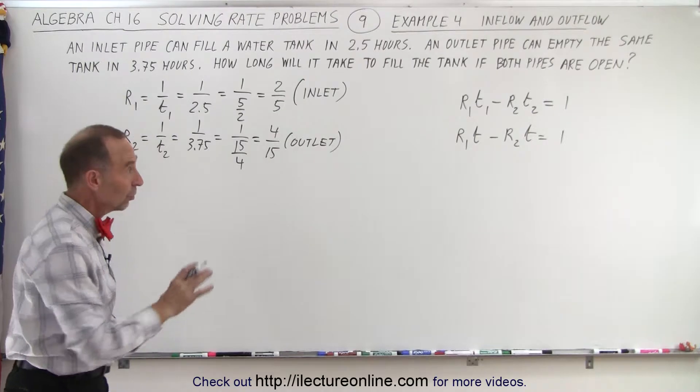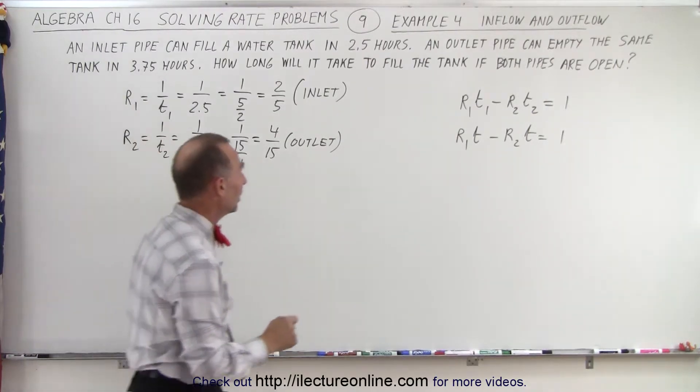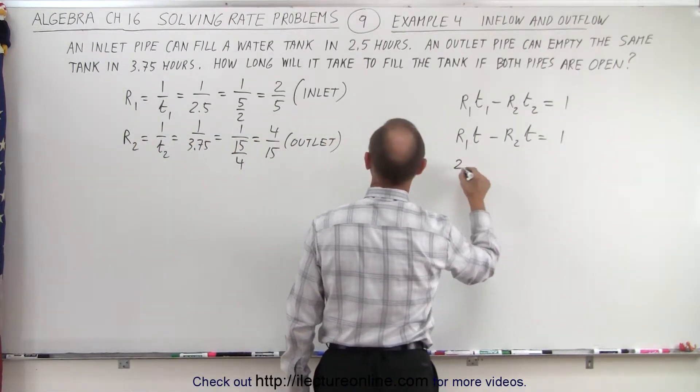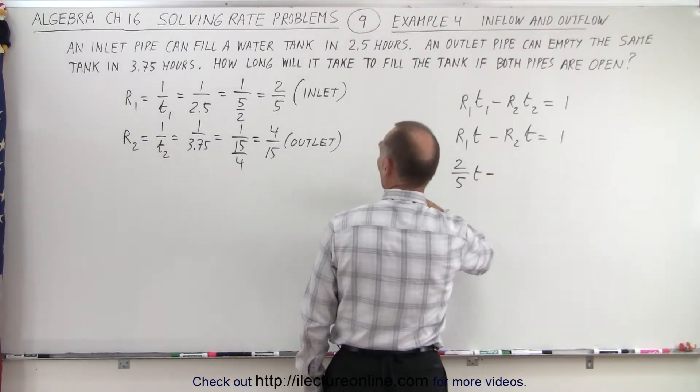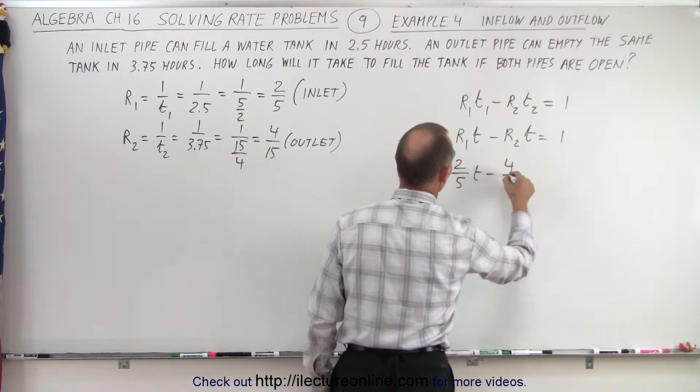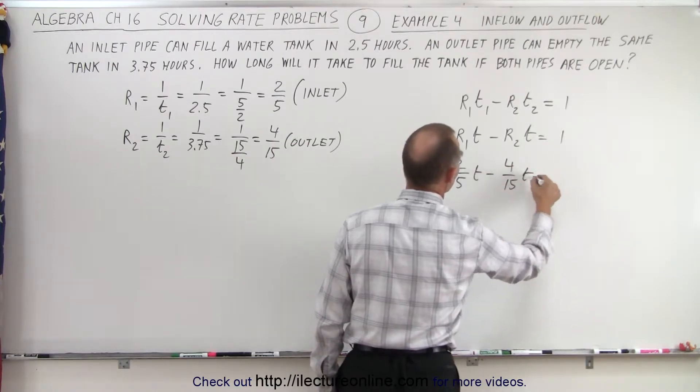Now we're ready to solve the problem. Let's put in the rates. So rate 1 is 2/5 minus the outlet pipe, which is 4/15 times T equals 1.